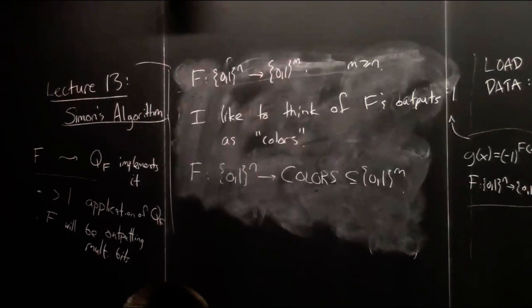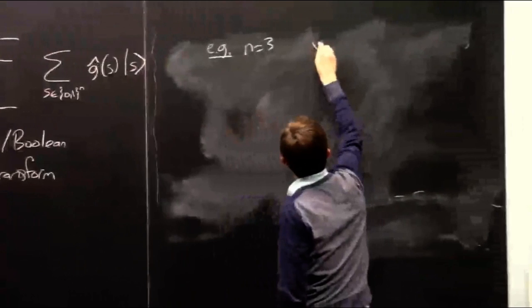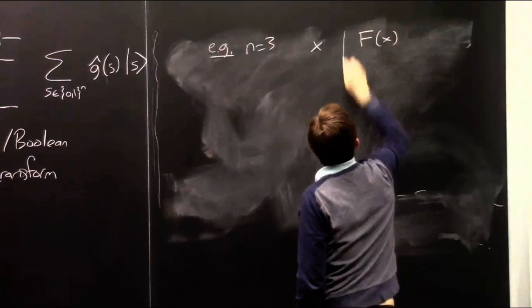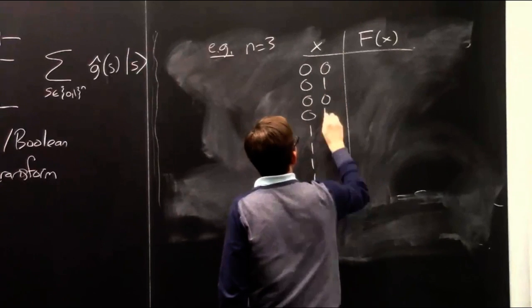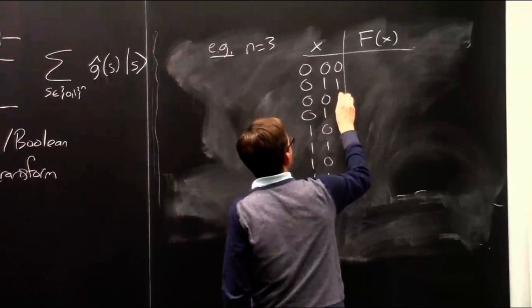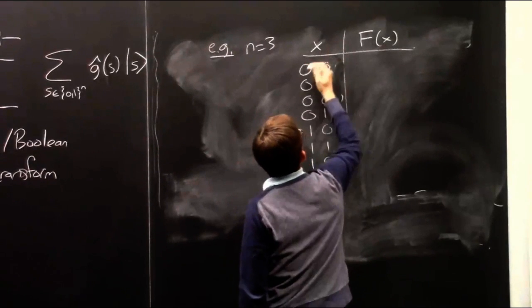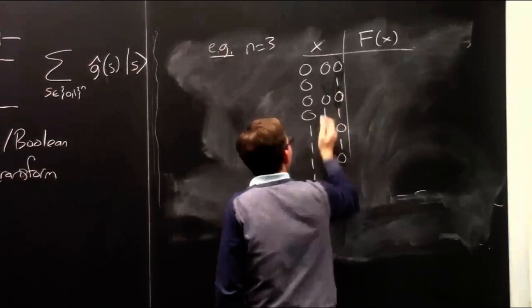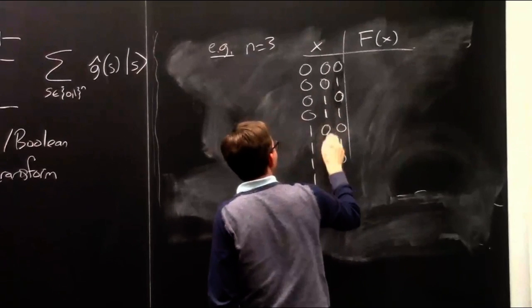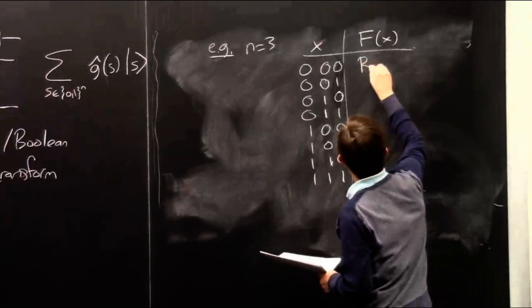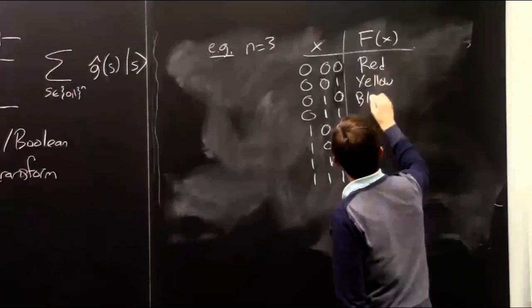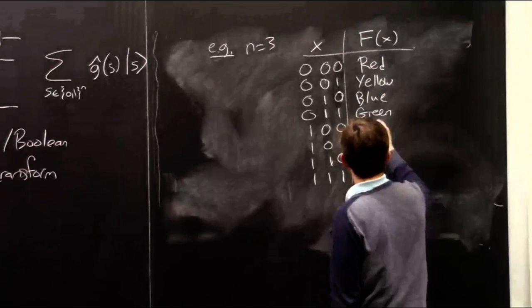As an example with n equals 3, I'll draw the truth table for f. There are eight possible input strings, and this particular f maps them to colors: red, yellow, blue, green, yellow, red, blue, green. These are all secretly some bit strings of some length, but what really matters is which values are the same and which are different.